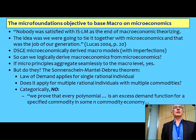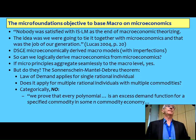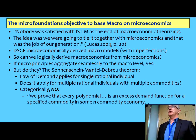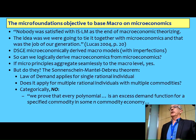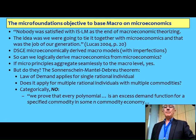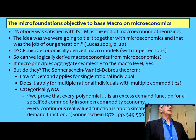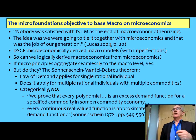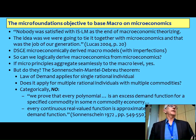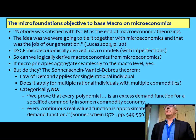The way that Sonnenschein put it — probably the clearest statement you can find in the literature — was to say that he proved that every polynomial can be an excess demand function for some commodity in some n-commodity world. A polynomial is what you can draw on a piece of paper without taking your pen off the page, without crossing back over, and without getting two values for one X input. So any continuous function you can draw — it can go up, down, wobble, go higher, go lower — anything you like can be a demand curve.